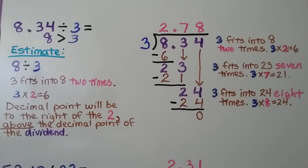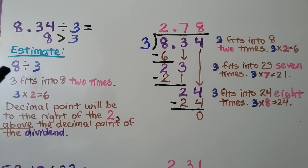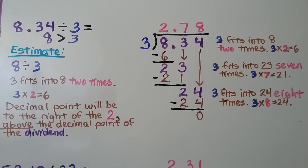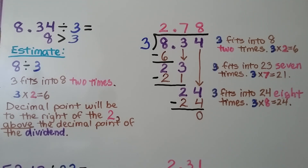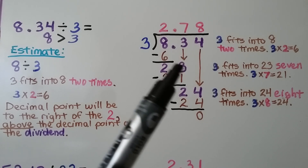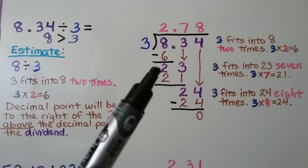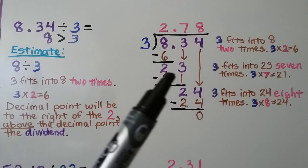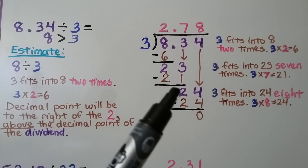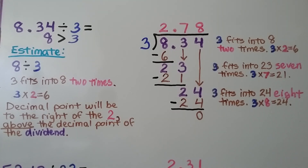Let's try another one where the dividend is greater than the divisor. We have 8 and 34 hundredths divided by 3. The 8 is greater than the 3. So we think: 8 divided by 3 — the 3 fits into the 8 two times because 3 times 2 is 6. We put a 2 here above the 8, and the decimal point will be to the right of the 2, above the decimal point of the dividend. 3 times 2 is 6; we subtract and get a 2. The 3 comes down. 3 fits into 23 seven times since 3 times 7 is 21; we subtract and get 2. The 4 comes down. 3 fits into 24 eight times because 3 times 8 is 24; we subtract and get 0. Our quotient is 2 and 78 hundredths.